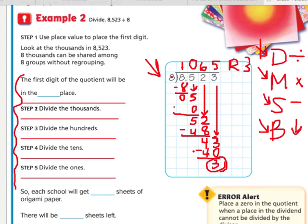So my answer is 1,065 remainder 3. So this is just your traditional way to divide, the easiest and most practical way, I think. And you can remind yourself of the steps by thinking, Does McDonald's serve burgers?